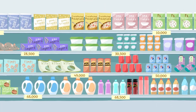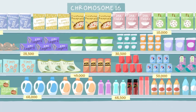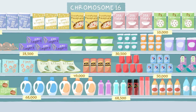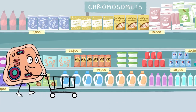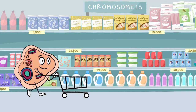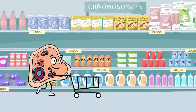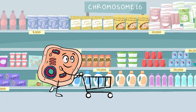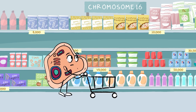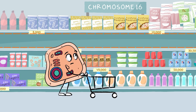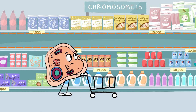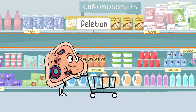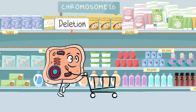Scientists call the shelves in the supermarket chromosomes. Everyone's supermarket shelves are stocked a bit differently. Sometimes the shelves have empty sections. These empty sections are called chromosome deletions.